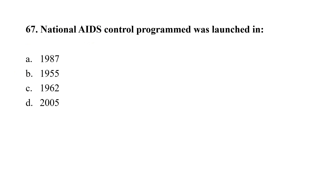Question number 67. National AIDS Control Program was launched in: Option A, 1987; Option B, 1955; Option C, 1962; Option D, 2005. The correct option is A, that is 1987. The National AIDS Control Program was launched in India in 1987.